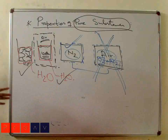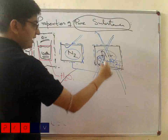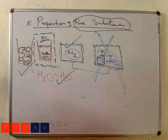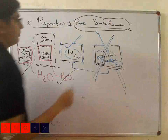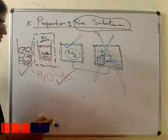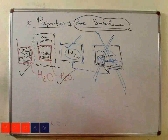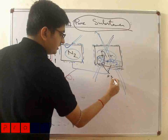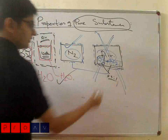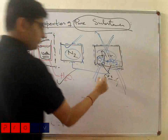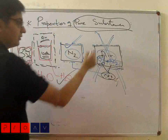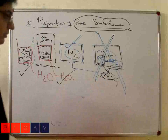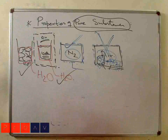We can only define properties of a pure substance. For the case of air — a combination of oxygen and nitrogen — if this ratio of oxygen and nitrogen varies, then the properties will also vary, so we can't define the properties of air. But if we fix the oxygen-to-nitrogen ratio, then it can be treated as a pure substance with definable properties.